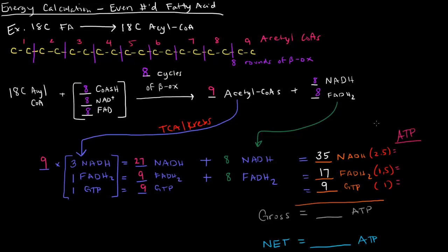All of these have a particular ATP value. These NADH's are valued at 2.5 each. So if you multiply 35 times 2.5, you should get 87.5. And then, 17 times 1.5 is 25.5. And then, the 9 GTP, they're all valued at 1. If you add these all up, you'll get a gross value of 122 ATP.